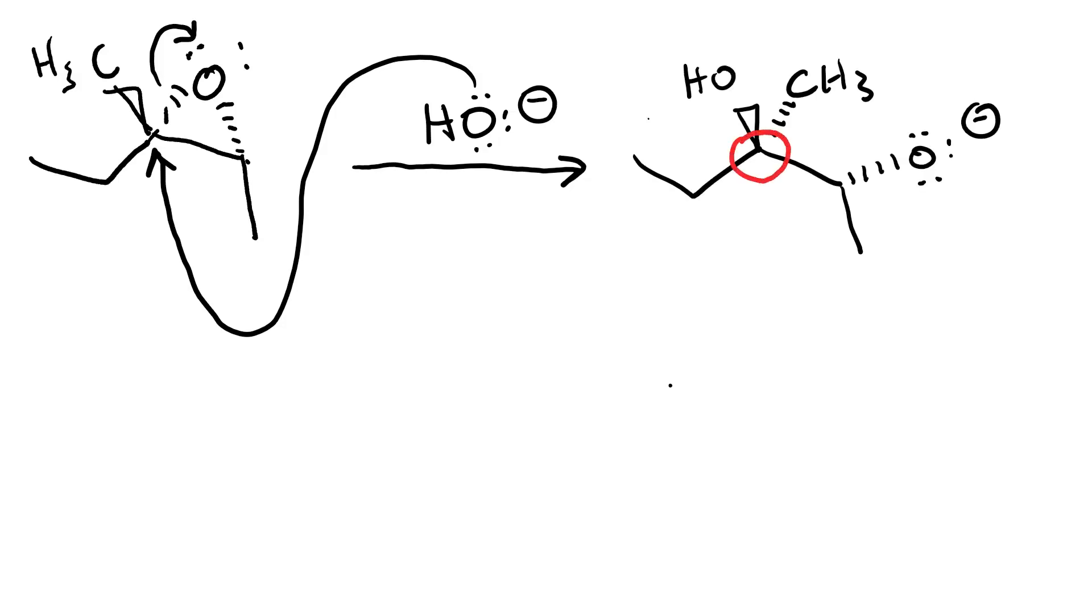Where the nucleophilic attack took place, because it was SN2, we got an inversion of configuration. The methyl group that was there on a wedge ended up on a dash, and the hydroxyl group added on a wedge.